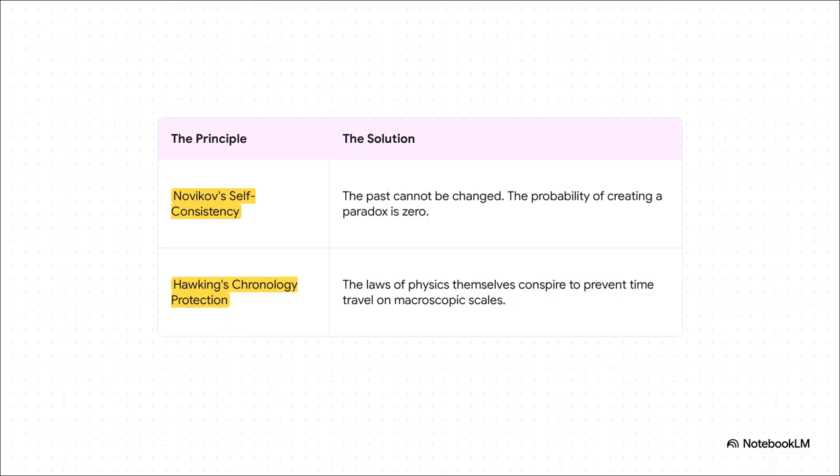So how do you fix that? Well, a couple of big ideas have been thrown around. One is the self consistency principle, which basically says you can't change the past. Anything you do back then was always part of history. The universe won't let you create a paradox. The other idea from Stephen Hawking is called chronology protection. It suggests that the laws of physics themselves will actively conspire to prevent us from building a working time machine in the first place. Nature, he said, abhors a time machine.